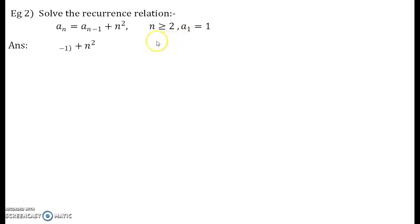First of all, consider the original recurrence relation that is given to us. Like we had done in our previous example, replace n by n minus 1. So, what we will get is an minus 1 equals to an minus 2 plus n minus 1 the whole square.